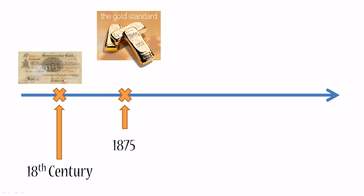Let's look at an example. For instance, country A says that one unit of its currency equals two ounces of gold. And country B says that one unit of its currency equals four ounces of gold.